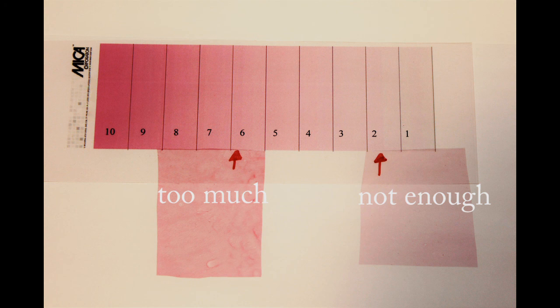If the sample has too much primer, it will be very dark in color. If the sample doesn't have enough primer, it will be a very light pink or colorless.